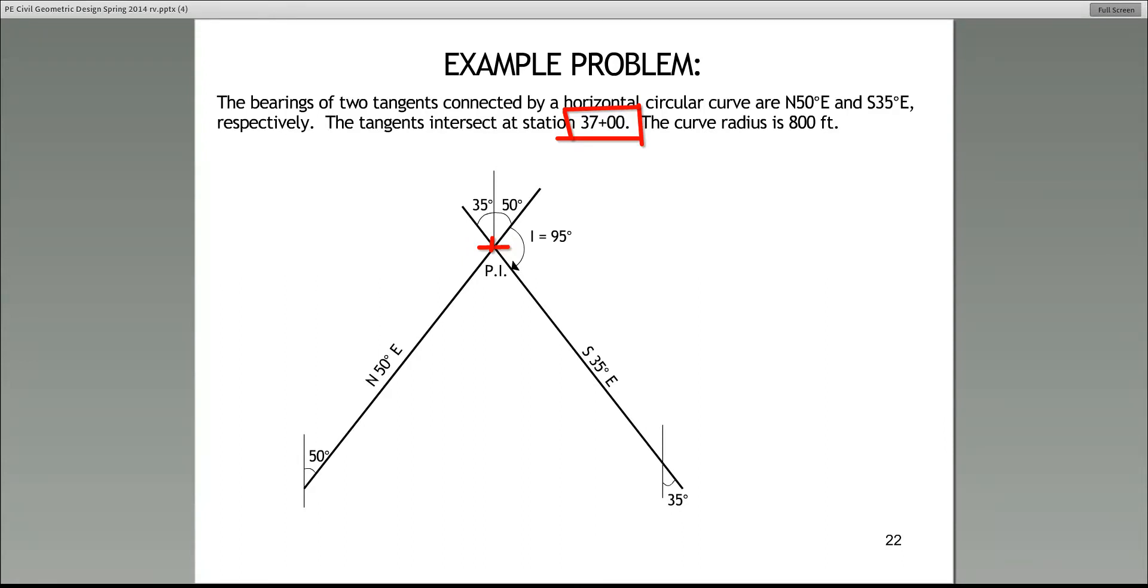What this says is that point of intersection has a station 37 plus 00. The concept of station is very important. What that means is the location of the point from where the surveyor began his survey. So there is a station that's called 0 plus 0. That's also called the point of beginning, POB. And then, to keep track of different points along the survey line, we establish these stations. And in many cases, generally, we define the stations in 100 foot segments.